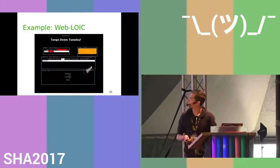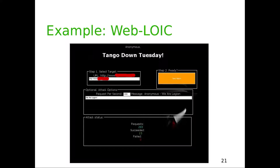An example is the Web-LOIC tool, which was used by Anonymous to attack some of our servers. You open a URL in your browser, type in the domain you want to attack, press 'New Attack,' and it starts flooding the server from your browser. No extra software needed — lots of people like this because there can't be a backdoor in it.